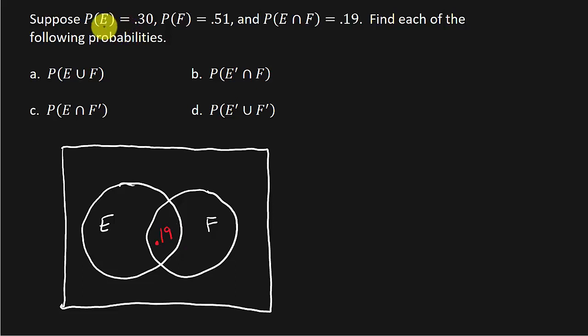All right, now it tells us the probability of E is 0.3. So to fill out this circle here, this E here, it's 0.3. Well, notice in E right here, we already have a 0.19.